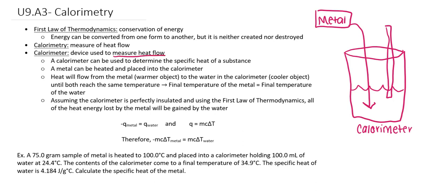Since the metal is going to be hot, about 100 degrees Celsius, and the water is going to be at about room temperature, 24 degrees Celsius, heat will flow from the metal to the water. Heat is going to continue to flow until both objects reach the same temperature. We can record that final temperature once heat stops flowing and then use that to do some calculations.